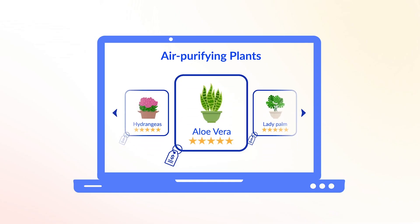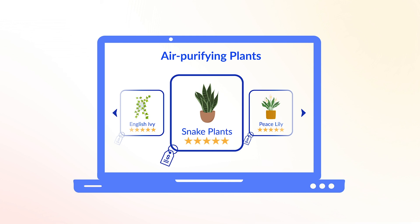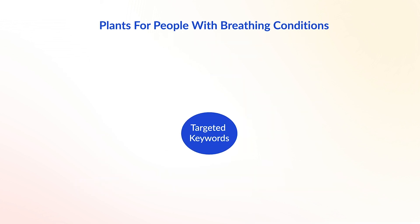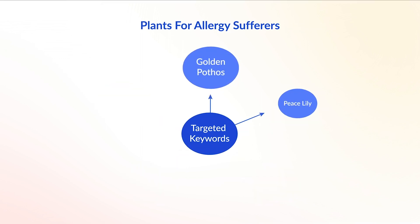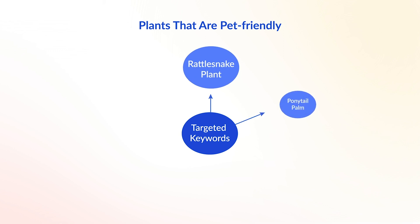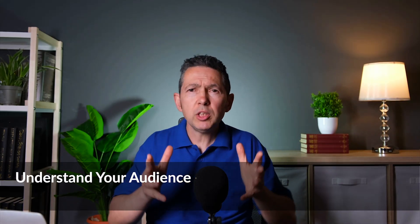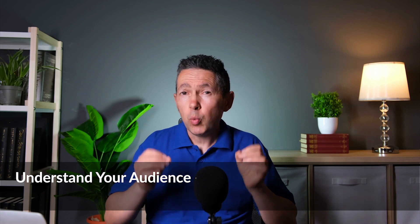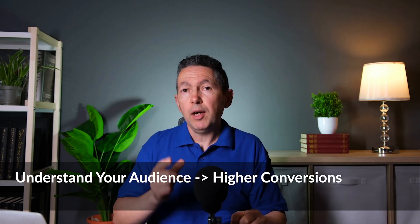Here are some examples. Some people may be searching for air purifying plants to help with a breathing condition such as asthma, and those people will have different needs from somebody just looking for plants that look nice and happen to clean the air. It would be a good idea to group keywords related to breathing conditions into their own bucket. Similarly, some air purifying plants are good for allergy sufferers, while others are not, and another group may be searching for pet-friendly plants. Understanding your audience helps you create the right content for them, which means serving the right page to the right people, leading to higher conversions and happy customers.